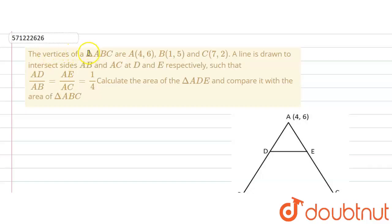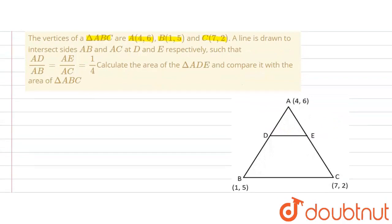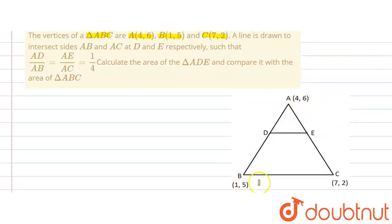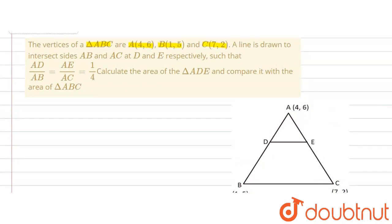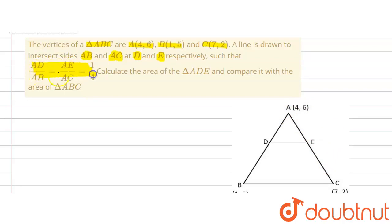The given question says that the vertices of triangle ABC are A(4,6), B(1,5) and C(7,2). A line is known to intersect AB and AC at D and E respectively, such that the ratio AD divided by AB is equal to AE divided by AC, which is equal to 1/4.